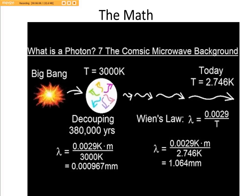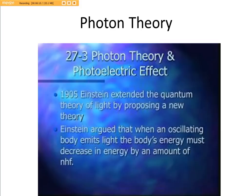In fact, there's a whole theory of photons by Einstein I didn't know this. It's called the photoelectric effect, and Einstein argued that when an oscillating body emits light, that body's energy must decrease in energy by the amount of that light.